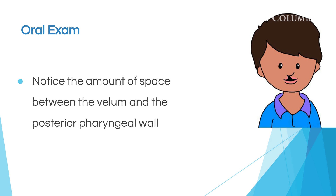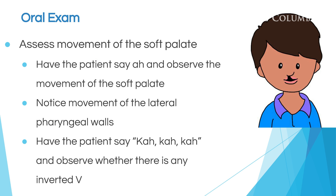When doing an oral exam, you also want to check the amount of space between the velum and the posterior pharyngeal wall. As you may recall from the previous module, the velum needs to move up and back against the posterior pharyngeal wall. So if there's a lot of space, it will be hard to achieve velopharyngeal closure. When looking at the child's mouth, look at the soft palate — have the child say 'ah' and observe how that soft palate is moving.